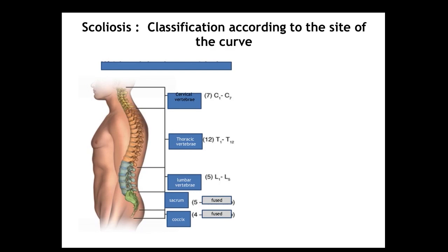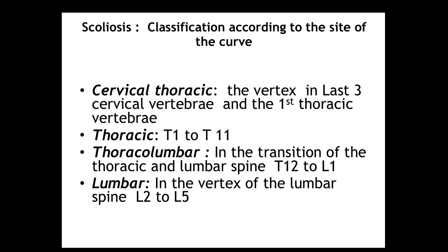According to the side of the curve, we give different names to the scoliosis. The cervical vertebrae are C1 to C7, thoracic vertebrae are T1 to T12, and lumbar vertebrae are L1 to L5, with the sacrum and coccyx fused in adults. The classification includes cervical, thoracic, thoracolumbar, and lumbar scoliosis depending on the location.